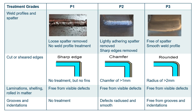Weld ripple or profile treatment varies from none for P1 to a smooth finish for P3. Treatment of edges is perhaps the most important. P1 requires limited treatment in that no sharp fins remain. P2 requires a chamfer of at least 1mm and P3 requires rounding to a radius of at least 2mm. For laminations, shelling and rolled-in matter, all levels require the surface to be free of such defects.